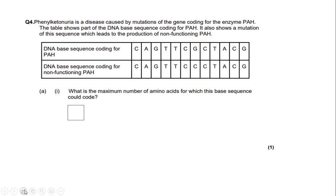Now I'm going to get onto some exam style questions. The first one: phenylketonuria is a disease caused by mutations of the gene coding for the enzyme PAH. The table shows part of the DNA base sequence coding for PAH, and also shows a mutation of the sequence which leads to the production of a non-functioning PAH. The bottom row is the mutated sequence.